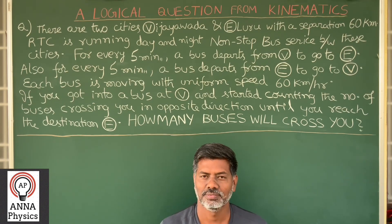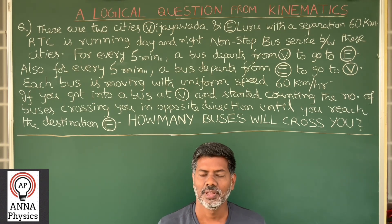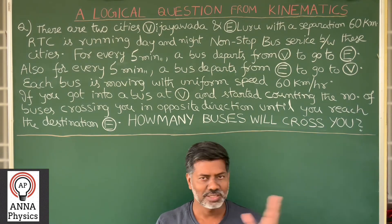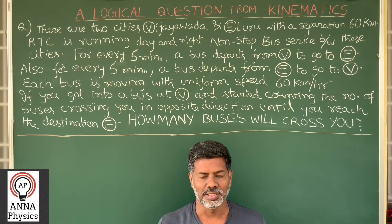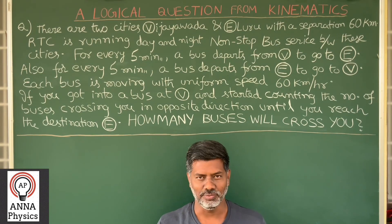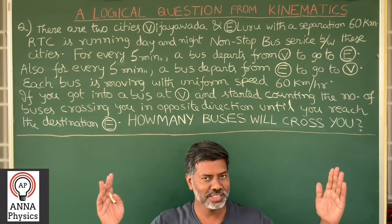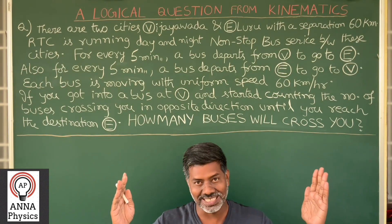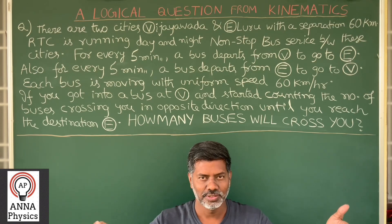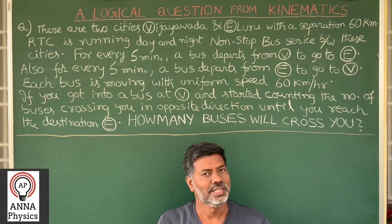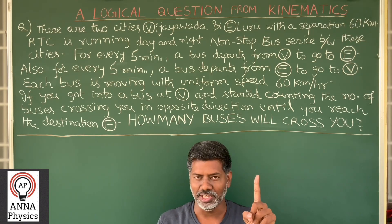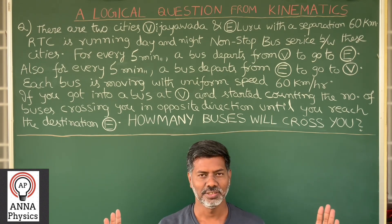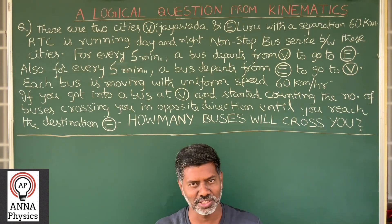Now, what is the travel time for any bus between these two cities? It is very simple — one hour. Distance is 60 km and bus speed is also 60 km per hour, so it is one hour travel time. There is no big deal with the calculation. You can easily solve this question.